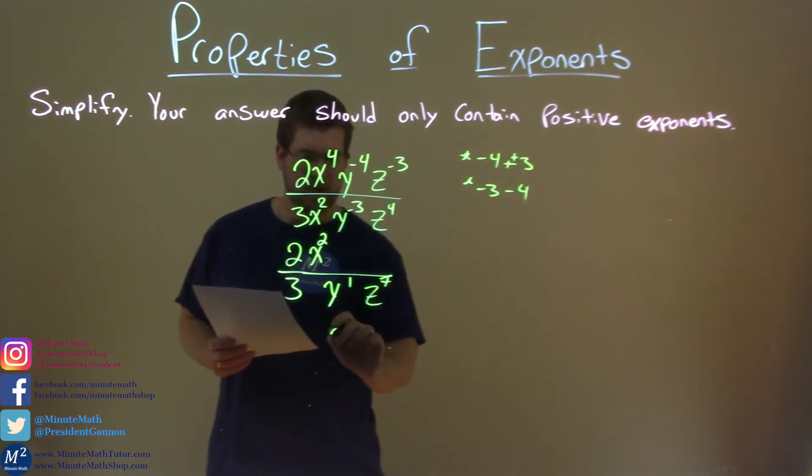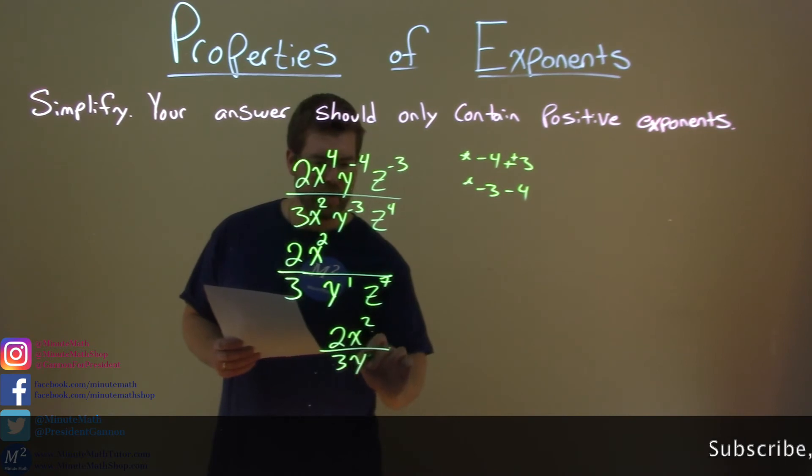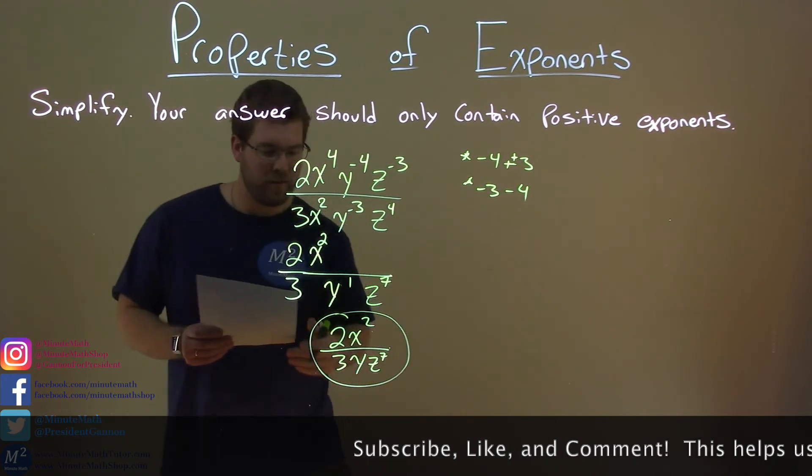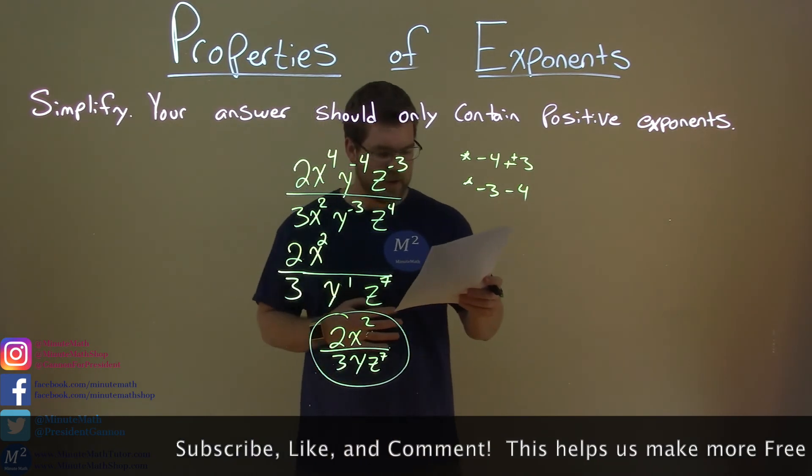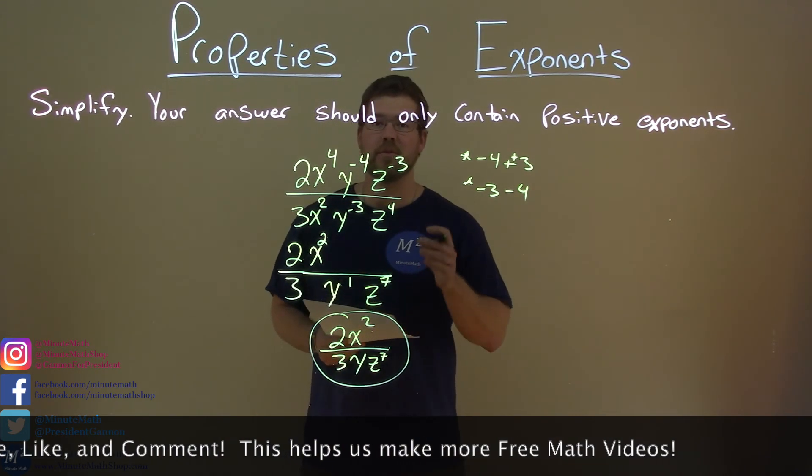So let's rewrite this now without the 1 there, 2x squared over 3yz to the 7th power. And after all of that, we have our final answer, 2x squared over 3yz to the 7th power.